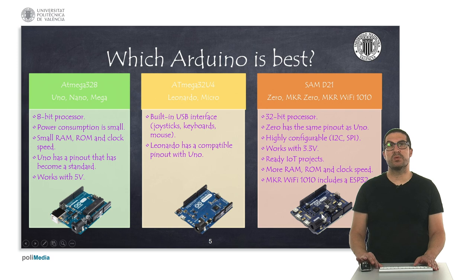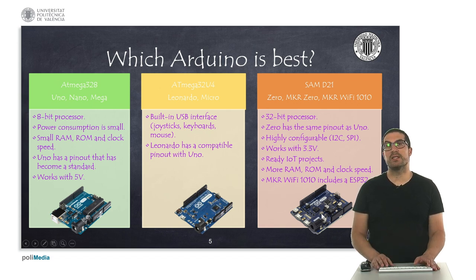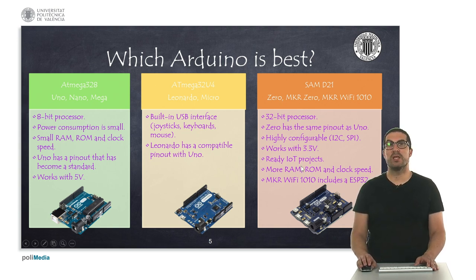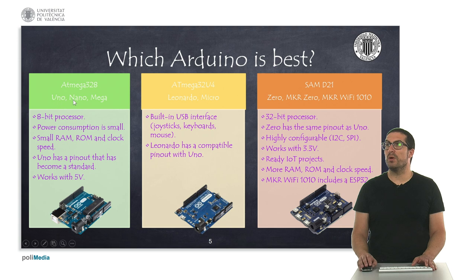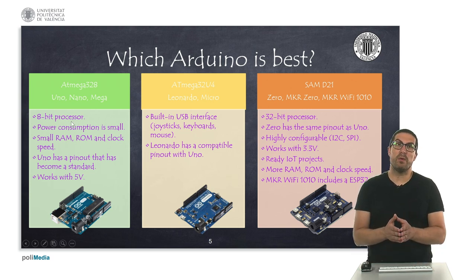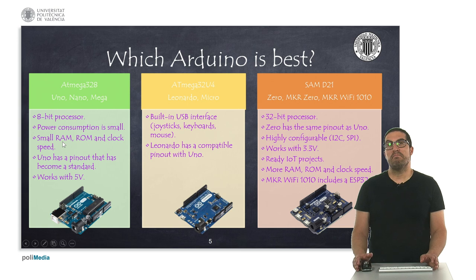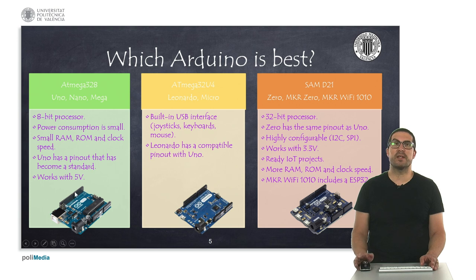The question that naturally arises is which is the best Arduino for your application. This depends on what you want to do, but in the context of this course I would recommend moving to the Arduino Zero because it has Wi-Fi communications. The classic boards — Arduino Uno, Nano, and Mega — work with the ATmega328 processor. This is an 8-bit processor, so it's very simple, has low power consumption, but also has small RAM, ROM, and clock speed. However, it's very easy to work with, operates at 5 volts, and has a pinout that has become a standard.